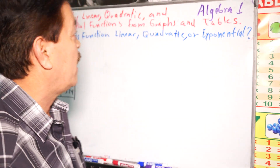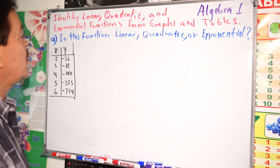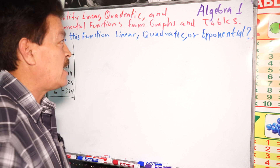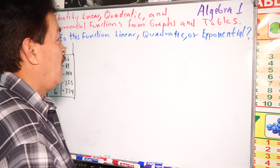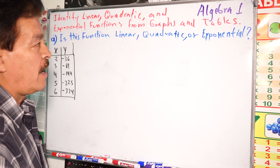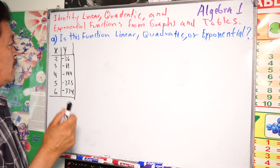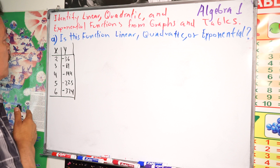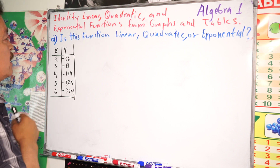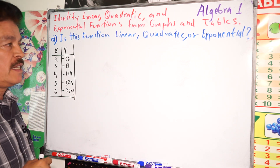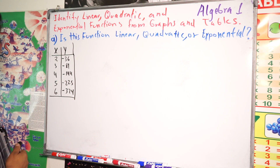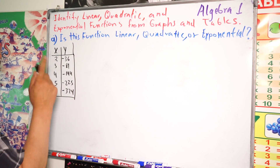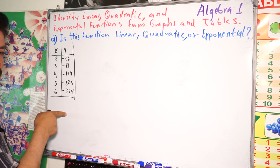Today I'm going to show you how to identify linear, quadratic, and exponential functions from graphs and from tables. This is our first problem: is this function linear, quadratic, or exponential? We have the table right here and we need to decide what kind of function represents this table.